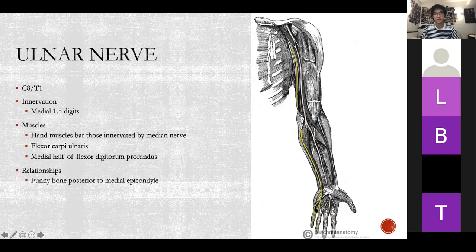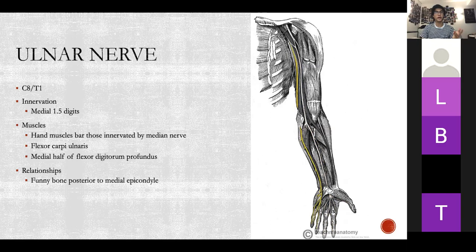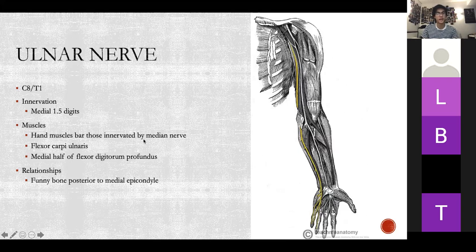The ulnar nerve runs down the medial aspect of the upper limb — C8 and T1. Its sensory innervation is the medial one and a half digits. If you knock your funny bone, the tingling is in your pinky and half your ring finger — that's a good way to remember it. The muscles it supplies are the intrinsic muscles of the hand bar those innervated by the median nerve, plus flexor carpi ulnaris and the medial half of flexor digitorum profundus. Its key relationship is the funny bone, posterior to the medial epicondyle.